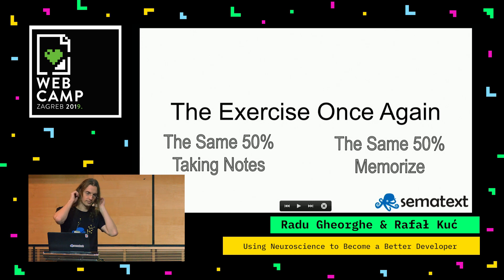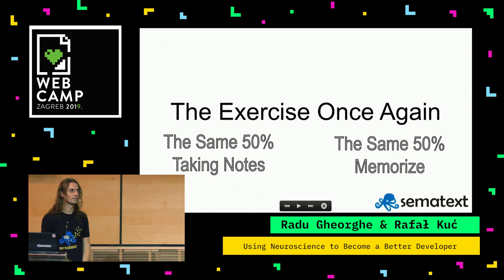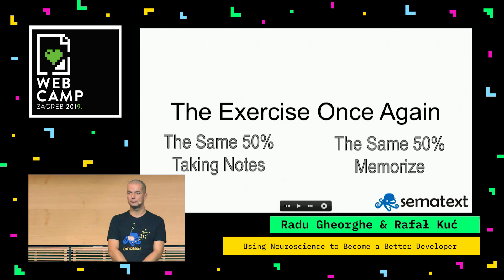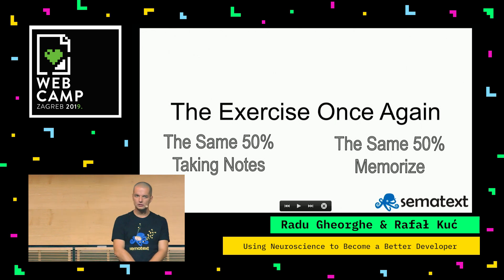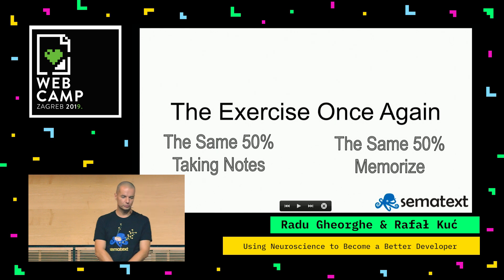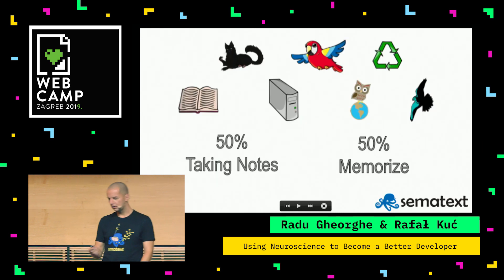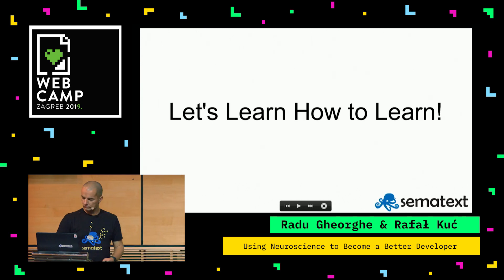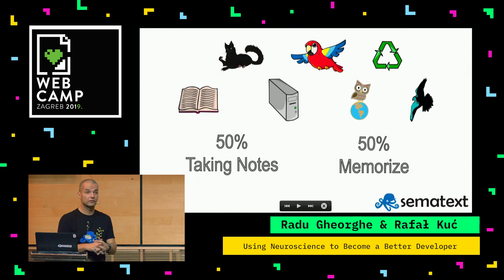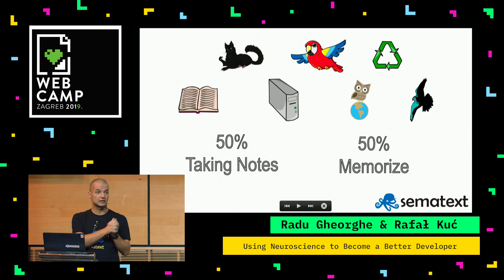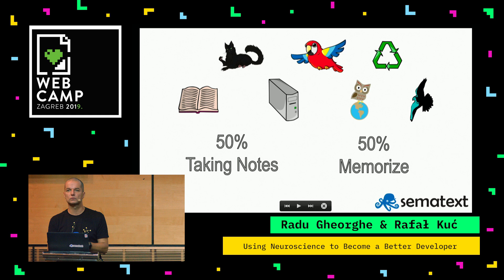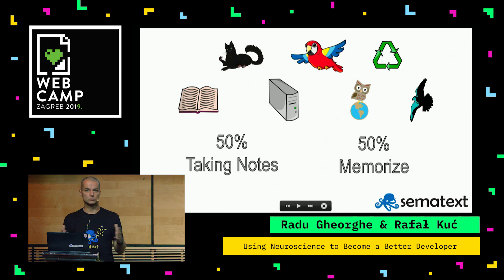The exercise once again. The same group who tried to memorize — please memorize the pictures again. And those of you who were taking notes, take notes. Keep in mind, pen and paper is the key here, and you'll learn why in a few minutes. Five seconds — not more. Try to remember, try to make notes of what you think is important.